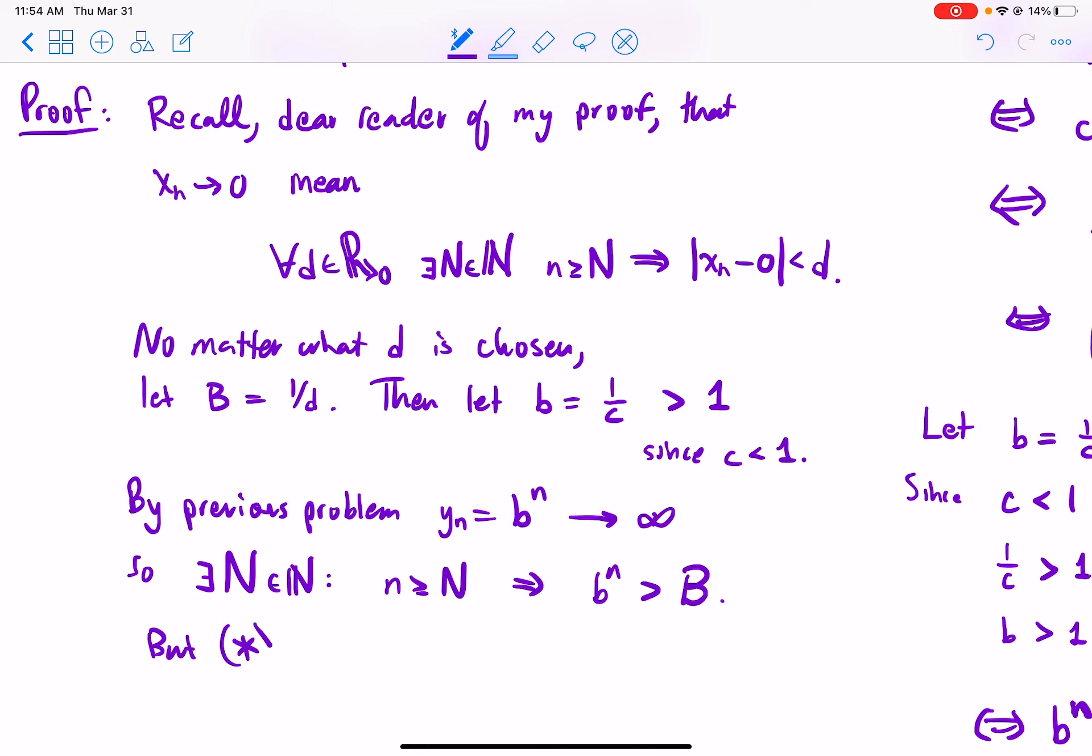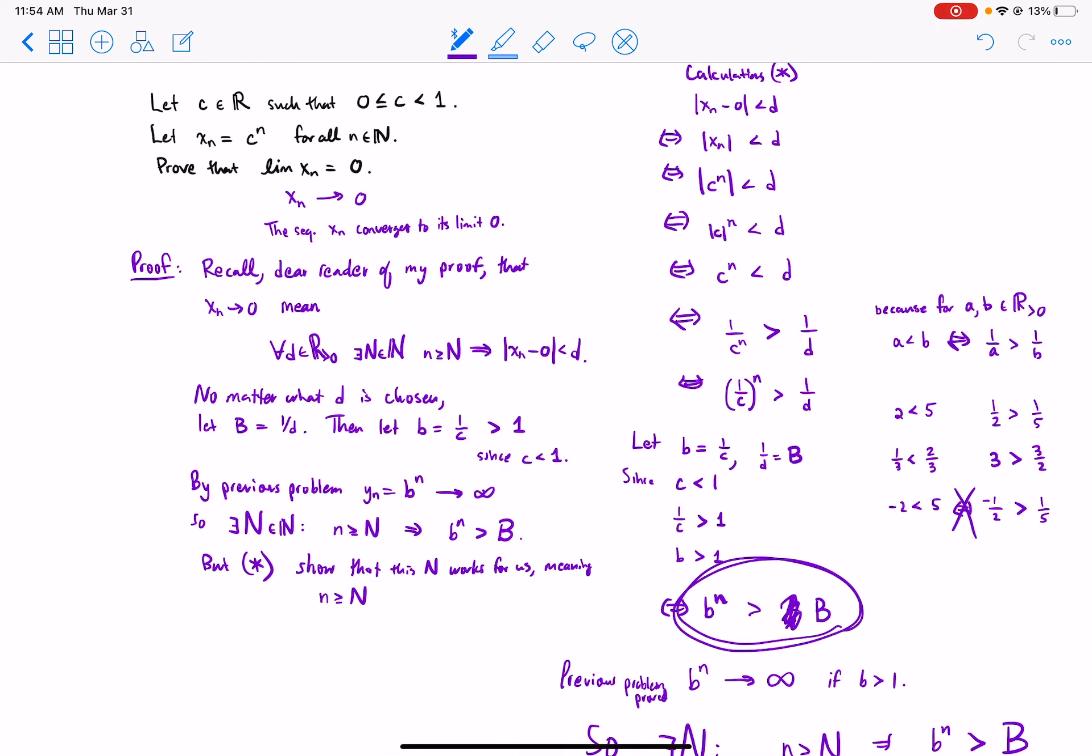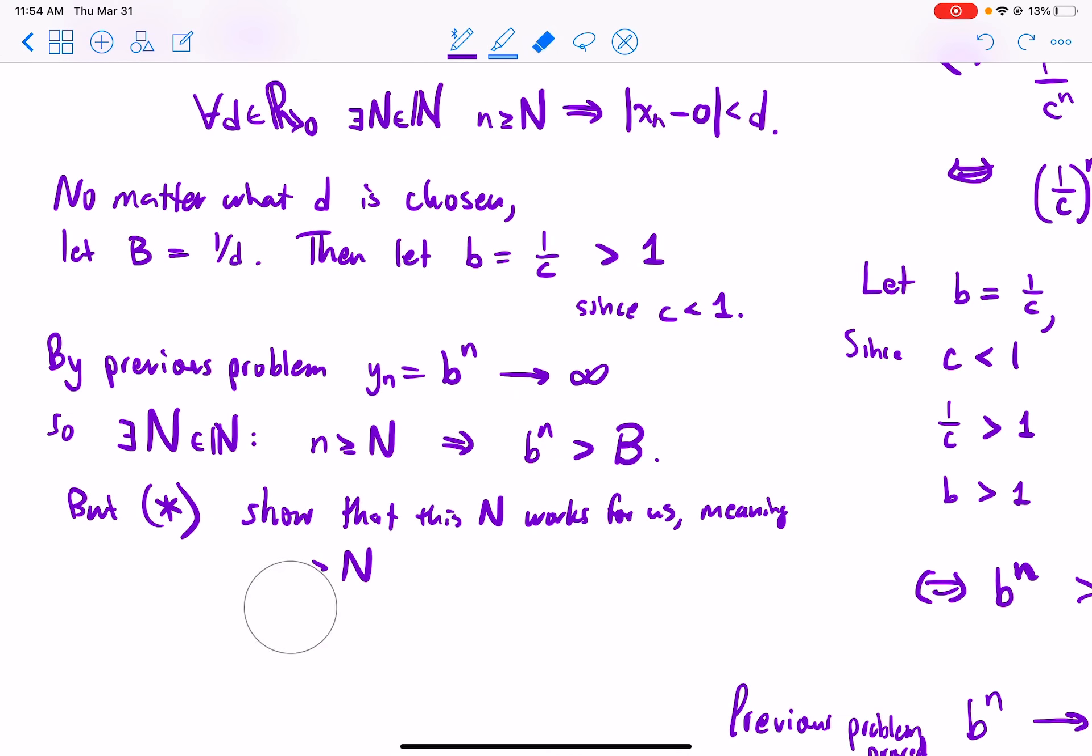But the calculations in star show that for the same capital N that this capital N works for us. Meaning b to the n greater than B if and only if x to the n less than d. Meaning b to the n greater than B is true if and only if |x_n - 0| is less than d. And that concludes the proof.